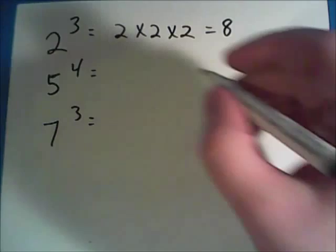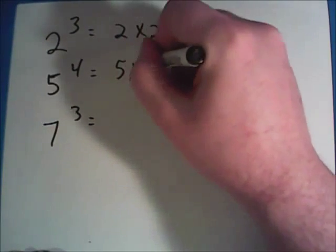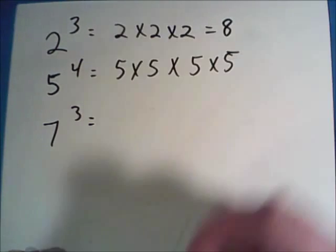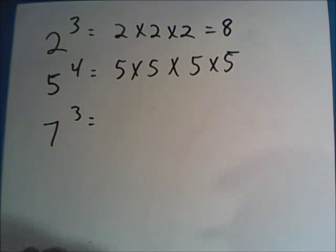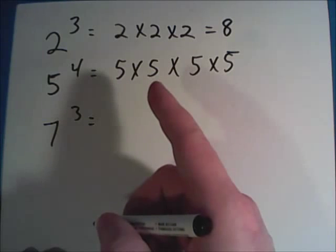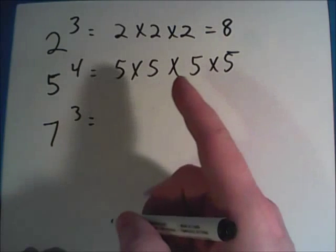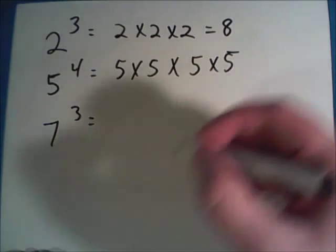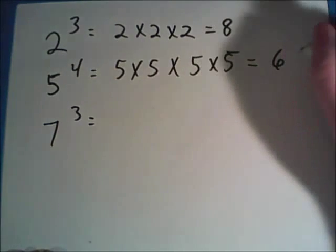The next one is five times five times five times five. There are four of them. You could just multiply straight across: five times five being twenty-five, and twenty-five times five being one hundred and twenty-five, and then take one hundred and twenty-five times five and end up getting six hundred and twenty-five.